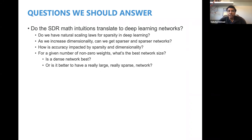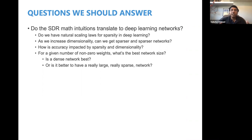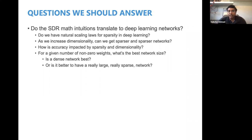So the question is: do we have natural scaling laws for sparsity in deep learning, in the same way that we have intuitions for SDRs? A big question that keeps coming up is: as we increase dimensionality, can we get sparser and sparser networks while maintaining accuracy? How is accuracy impacted in general by sparsity and dimensionality? If you're given a budget of a fixed number of non-zero weights or non-zero parameters, what's the best network size? Is it better to have a small dense network, or is it actually better to have a really large, really sparse network? These are all variations of the same theme of looking at how dimensionality affects performance in deep networks.